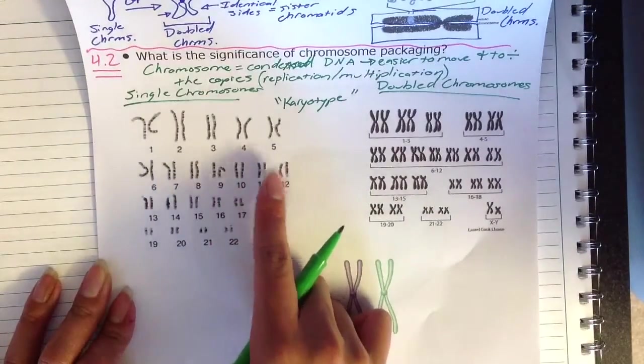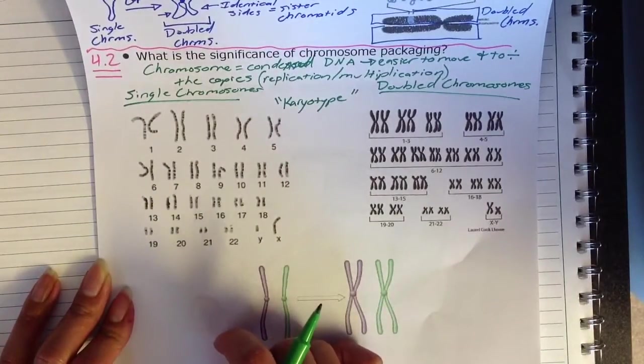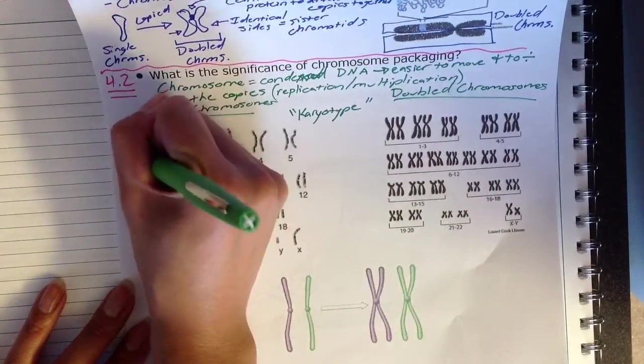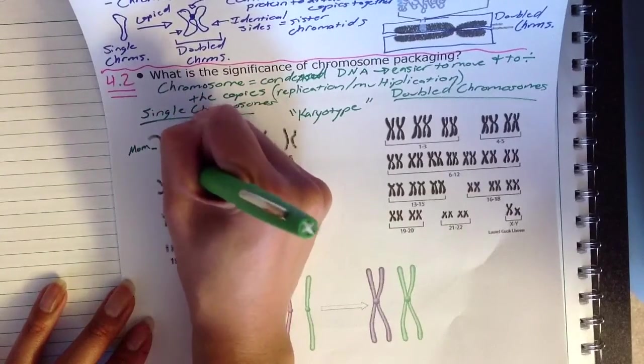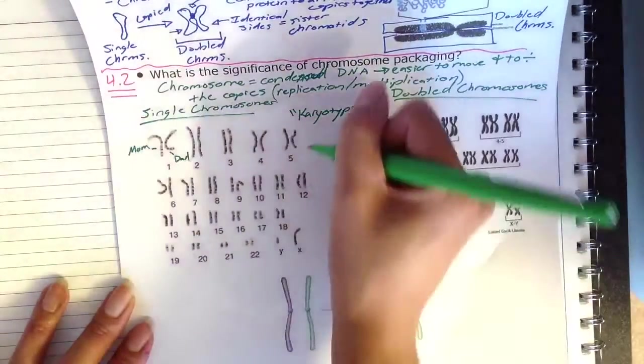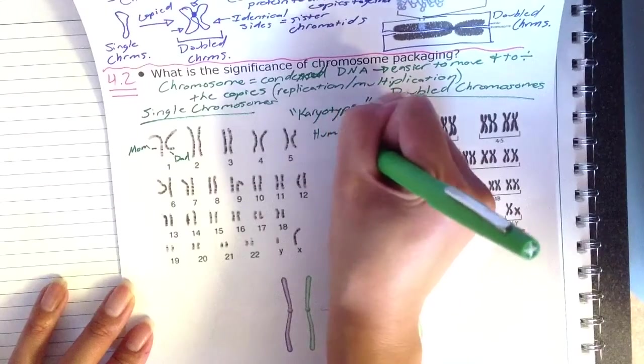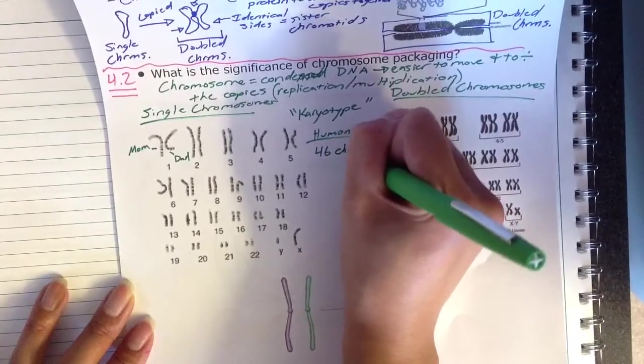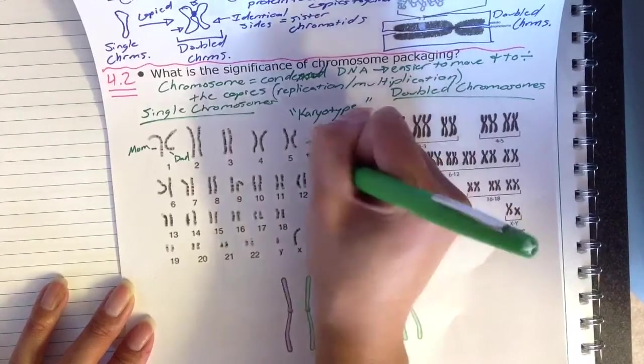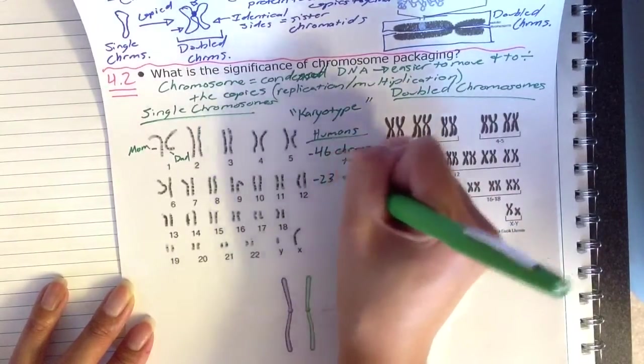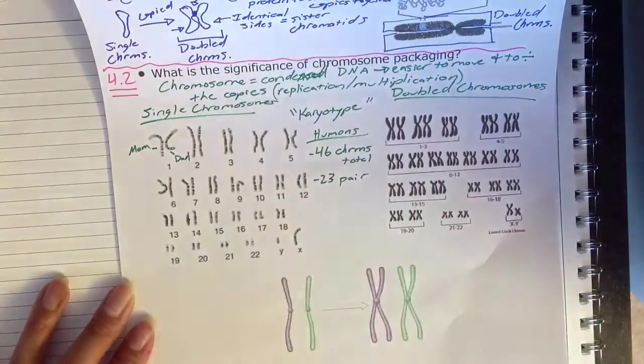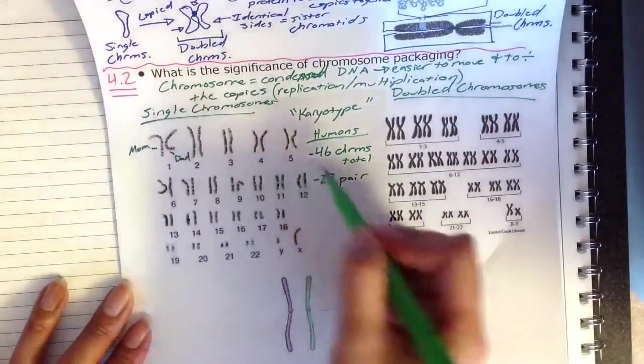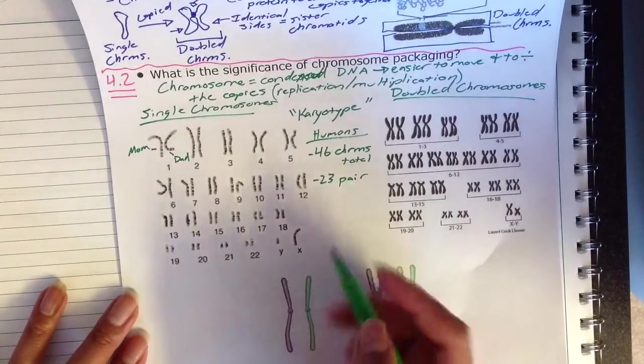All chromosomes come in pairs, and those pairs come from your parents. So you'll have one chromosome from mom and one chromosome from dad. And you'll have, in humans, 46 chromosomes total, which means you'll have 23 pairs. So you'll get 23 from mom, 23 from dad, and they'll all pair up to make your 46 chromosomes total.